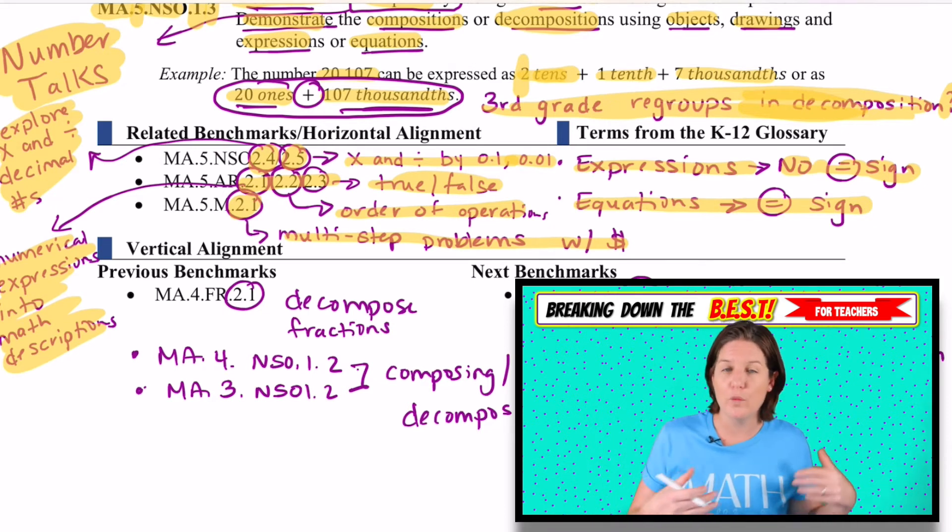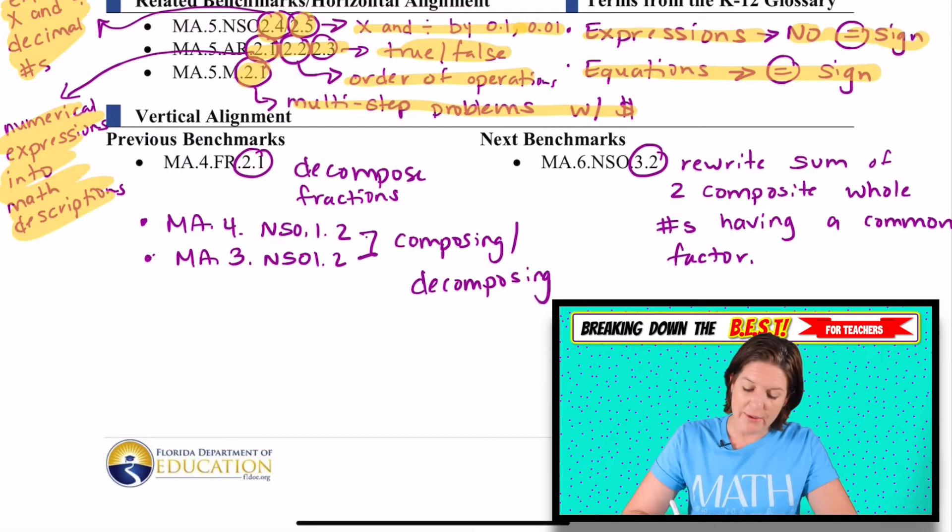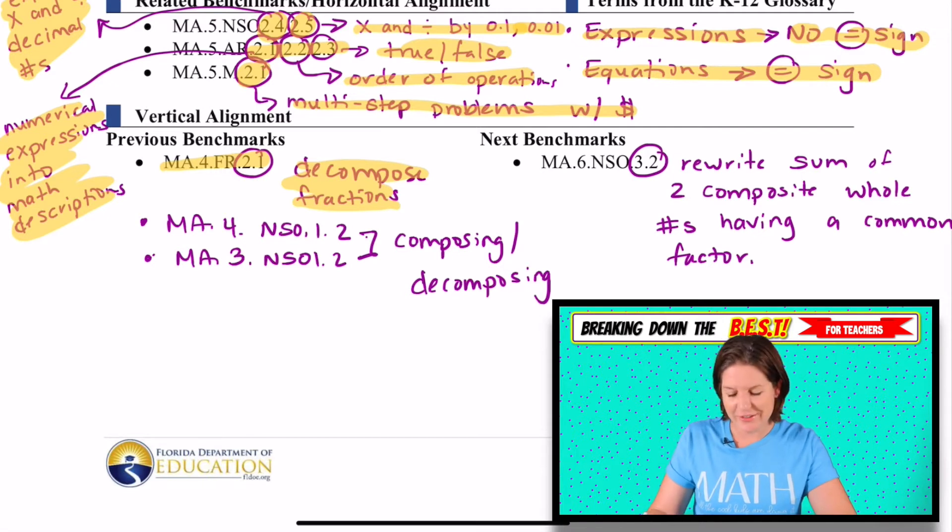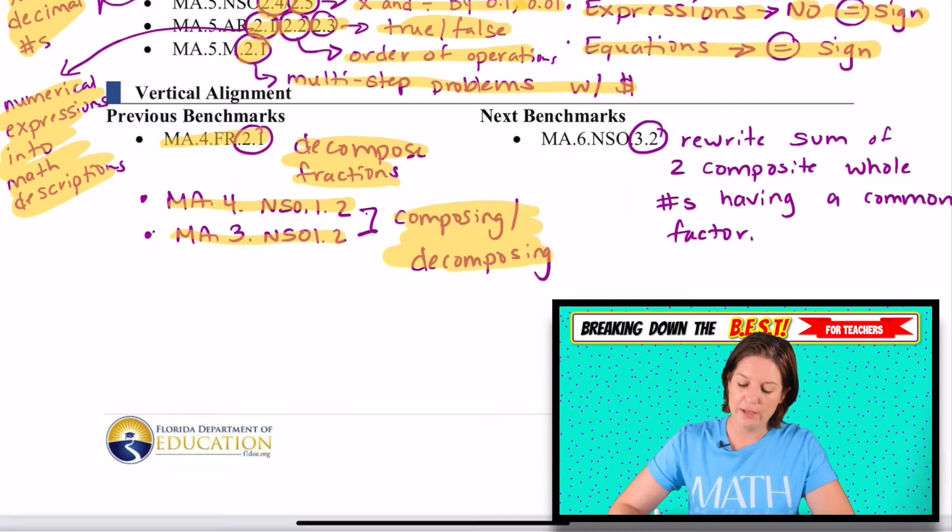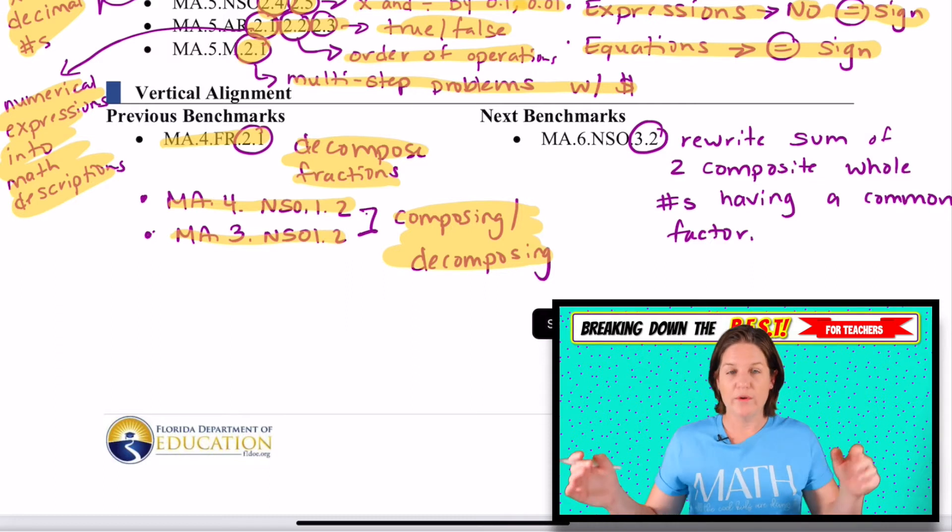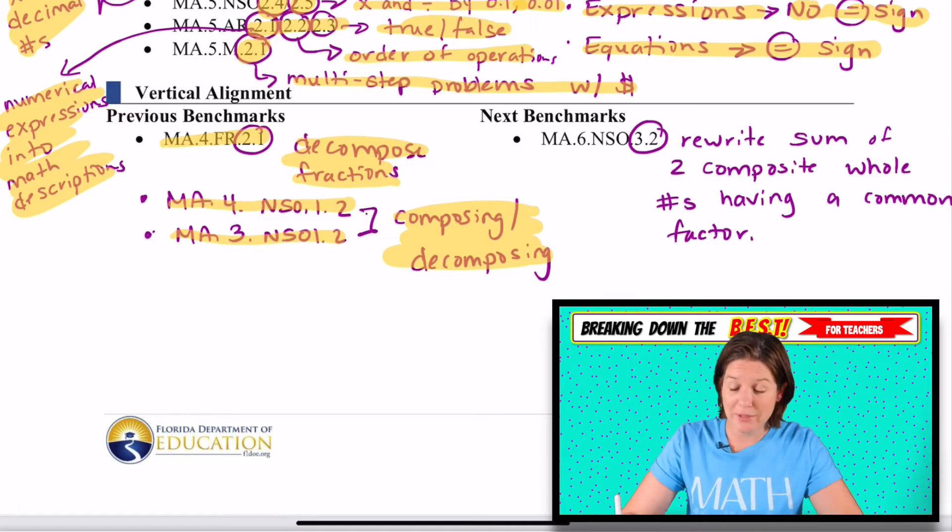But what I like to know is where are they coming from? What knowledge should they be coming up with? And where are they going next year in sixth grade? So in fourth grade, we've got MA.4.FR.2.1, which is decomposing fractions, breaking down fractions, the sum of fractions. And I was like, really? That's the standard that you're going to list there? Because I can think of a couple other standards. So I actually listed them. The MA.4.NSO.1.2 and the same standard, but in third grade, both have to do with composing and decomposing numbers. So with Taking on the BEST, if you know that your students might struggle with the fifth grade level of this, you can go down to the fourth grade level and kind of prime their knowledge and then move them up into fifth grade if you want.